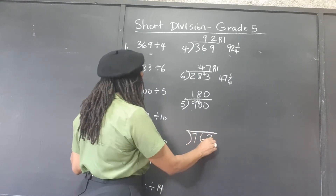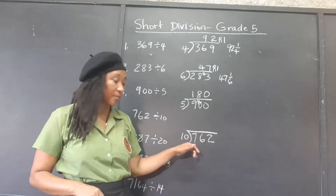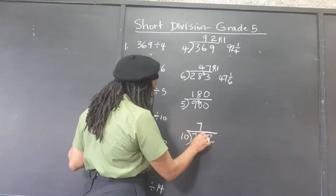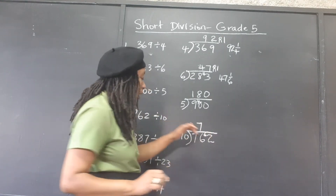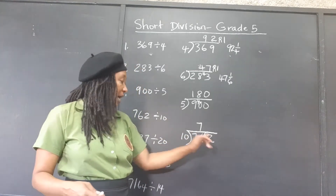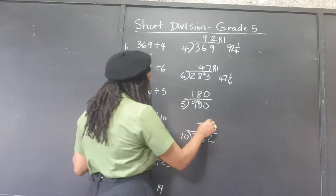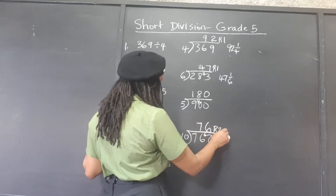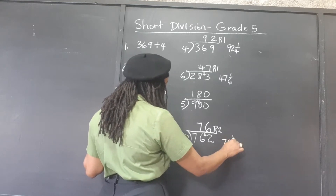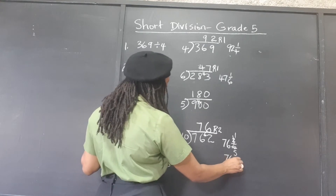762 divided by 10. 10 can't go into 7. 10 goes into 76 seven times, remainder 6. Put the remainder as a small number to the left of the next place — this becomes 62. So 10 goes into 62 six times, remainder 2. Or 76 and 2 over 10, which can be reduced to 1 fifth — 76 and 1 fifth.